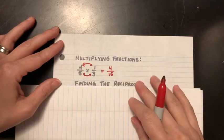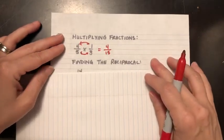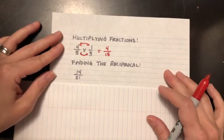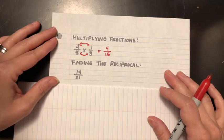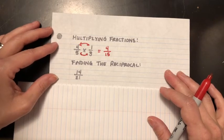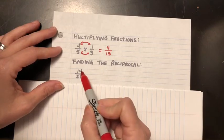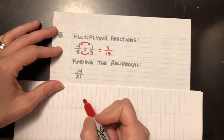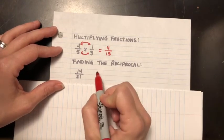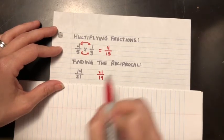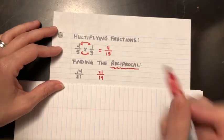All right, finding the reciprocal is yet another skill we need to have. Hopefully you all remember this. What is the reciprocal? It's where you flip the numerator and the denominator—you just have to turn it around. So 14 over 21 will become 21 over 14. That is the reciprocal.